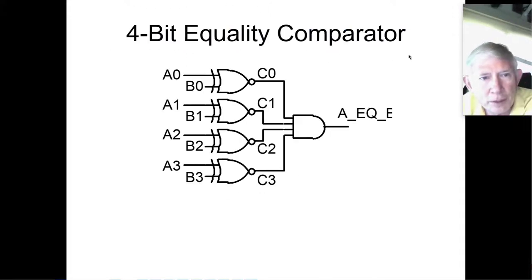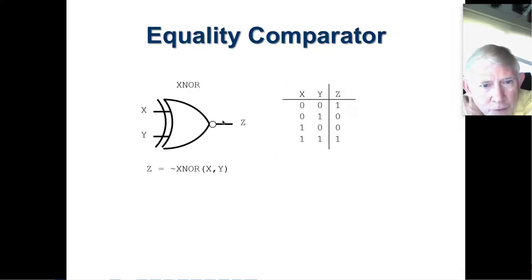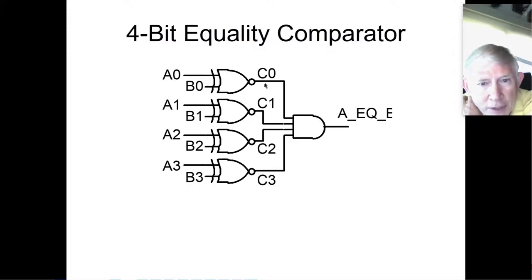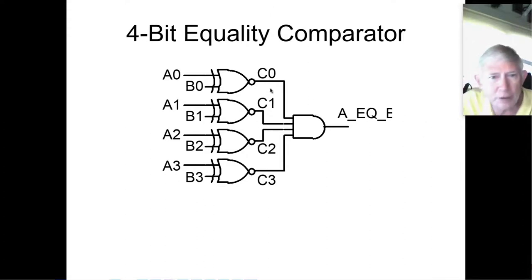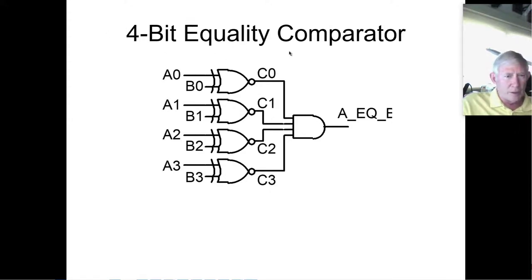Here's a four-bit equality comparator. We're doing each individual bit with this XNOR. If you get ones out of all these gates, then A equals B. But if any of these gates puts out a zero, then the output from the AND gate will be zero, and you'll know that A and B are not equal. This is one way to use five gates to do a four-bit equality comparator between two four-bit vectors.